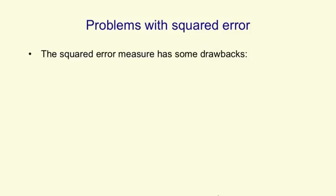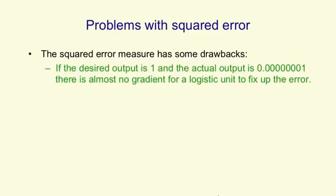But the squared error measure has some drawbacks. If, for example, the desired output is a one, so you have a target of one, and the actual output of a neuron is one billionth, then there's almost no gradient to allow a logistic unit to change. It's way out on a plateau where the slope is almost exactly horizontal, and so it will take a very, very long time to change its weights, even though it's making almost as big an error as it's possible to make.